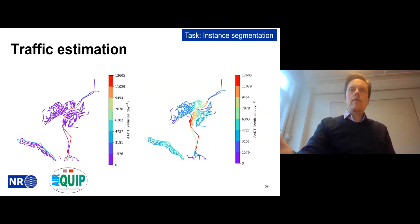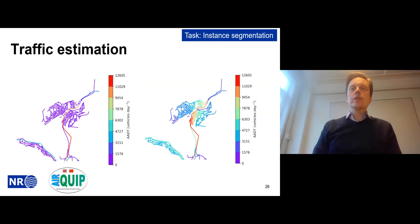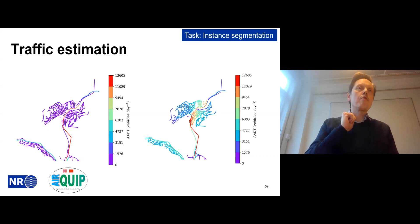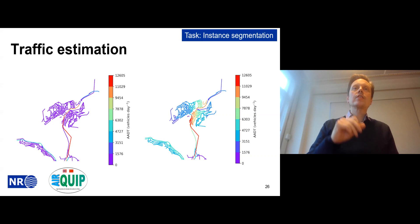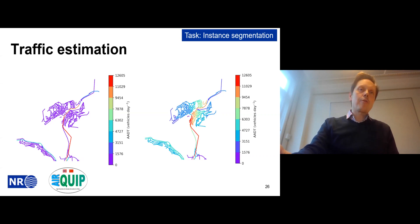By doing this, we can estimate traffic across the whole city. Deep learning was a key component because it provided robust estimates of the number of cars on each road link. Without that technology, we tried this approach 10 years ago and struggled a great deal — it was very difficult.